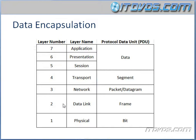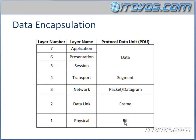Data encapsulation is the process of surrounding or encapsulating our data with networking information so that it can get to its destination over the network. At layers 5, 6, and 7, the data is still just the data — it might be manipulated a bit. By the time it gets down to layer 4, the data is done being manipulated and we encapsulate it, and it turns into a segment. At layer 3 it becomes a packet or datagram. At layer 2 it becomes a frame. And at layer 1, when it's actually being transmitted across a wire, it's called a bit.